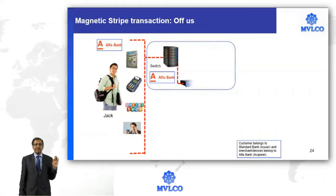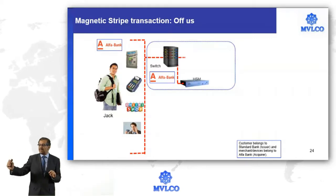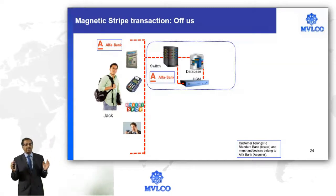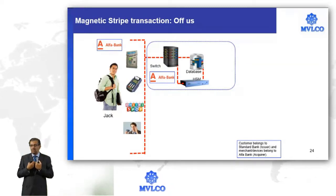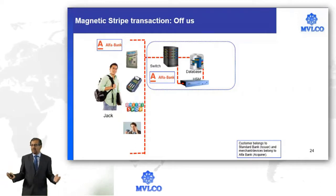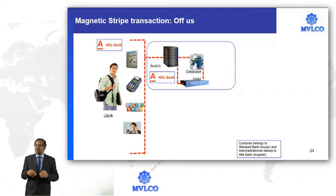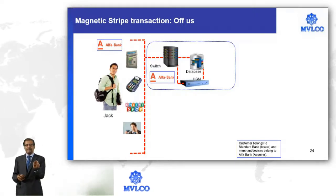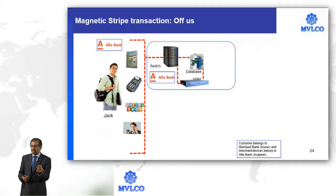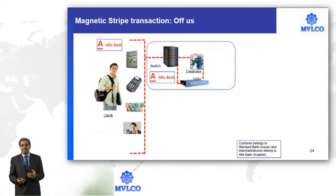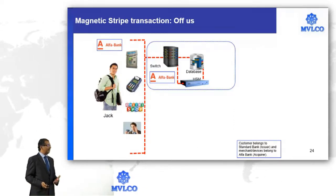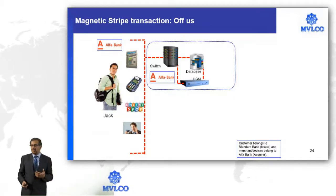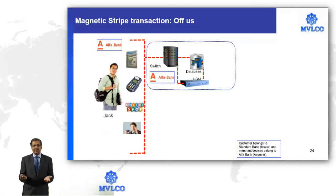How did we identify that? We identified it by the concept of the BIN, or issuer identification number. When we look at the issuer identification number, we know whether it belongs to us or somebody else. When it belongs to somebody else, we need to understand which network to use. Based on the prefix of the card number — maybe 4 could be a Visa card, 5 could be a Mastercard — we identify the network and forward that information to that particular network, like Visa, Mastercard, China UnionPay, or RuPay.